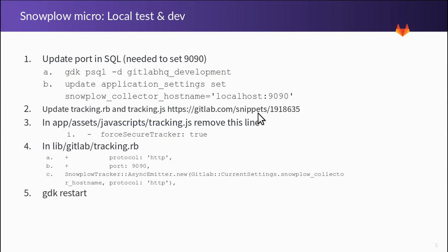The configuration part is that you have to change your application settings to be able to use port 9090 — you have to update the application settings in the Postgres database console. You also need to change two files in your GitLab instance: tracking.js and tracking.rb, to be able to use your local instance with an insecure non-SSL URL. In the future I'm sure that will change and things will be easier.